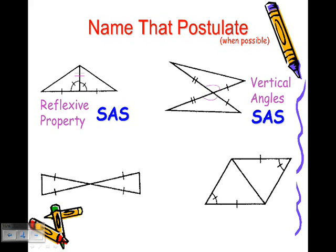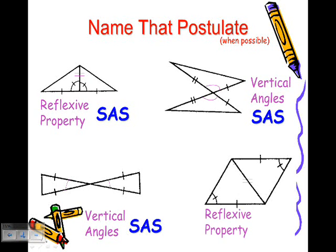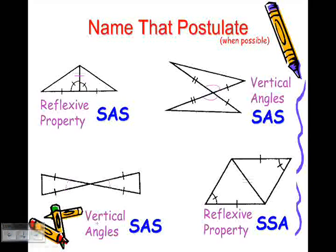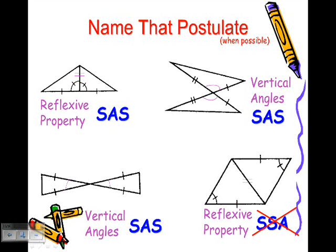Look at the next two and determine what you think they'll be. On the third one, I can add my vertical angles in and I will see that I have SAS once again. And on my fourth one, I can add my reflexive side that's equal to itself, but I'm still going to get SSA, which of course is not a property or a postulate that we can use.